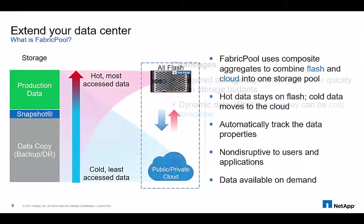FabricPool is an all-SSD aggregate that has an external capacity tier attached to it. Data that is written to ONTAP SSD aggregates is denoted as the performance tier, and backup and snapshot data that is moved to Amazon S3 or NetApp StorageGRID web scale is called the capacity tier.